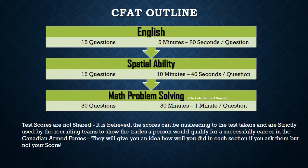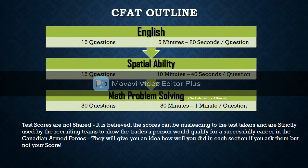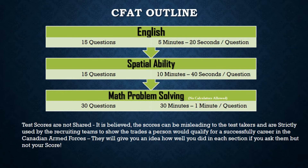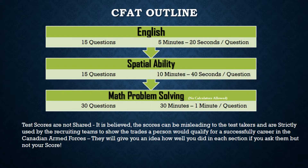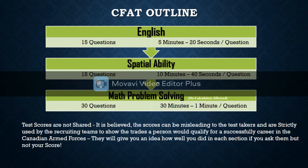By now most of you know that the CFAT consists of three parts: English, Spatial Ability, and Math Problem Solving. Each section has a different number of questions and different time slots. The English section has 15 questions and 5 minutes — that's 20 seconds per question. Spatial Ability also has 15 questions but 10 minutes, giving you 40 seconds per question. The last section, Math Problem Solving, has 30 questions and 30 minutes — one minute per question. No calculators are allowed.